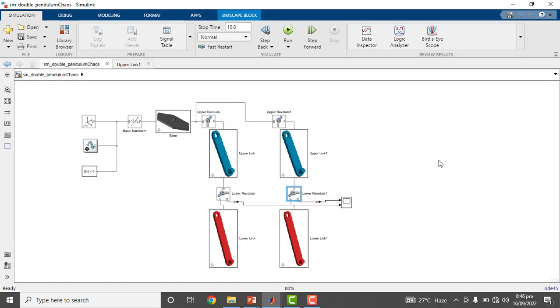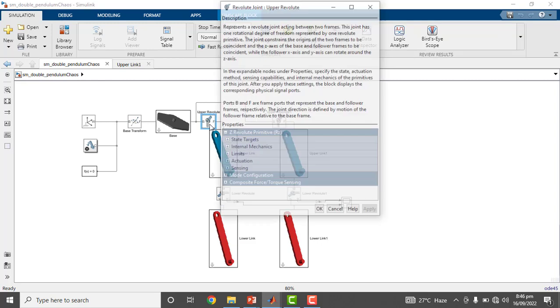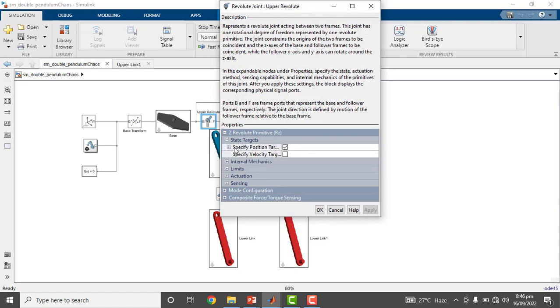I have simulated it in Simulink Simscape and the angular position of first link of first double pendulum is 120 degrees.